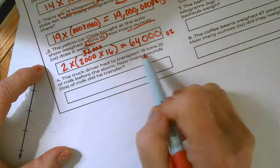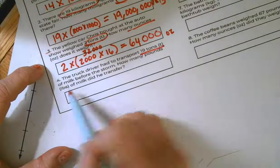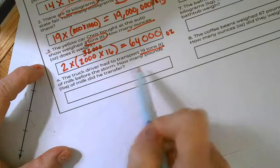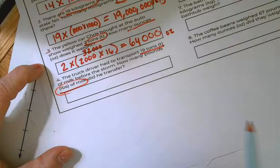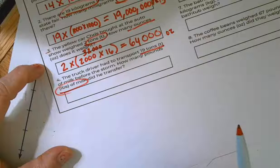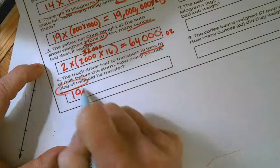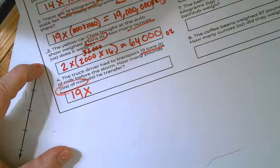The truck driver has to transport 19 tons of milk before the storm. How many pounds of milk did he transfer? Okay. So we're changing 19 tons into pounds. So 19 larger to smaller. I'm going to multiply.